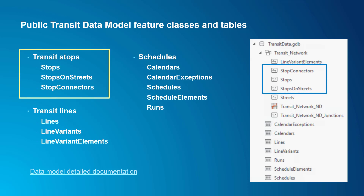There are three feature classes that model the locations and characteristics of transit stops and their connections to streets. The stops feature class is very similar to GTFS stops. The geometry is the latitude and longitude of the stops, and it has various fields with stop characteristics, such as an ID relating it to the other tables, the type of the stop or station, and a field indicating whether it's wheelchair accessible.